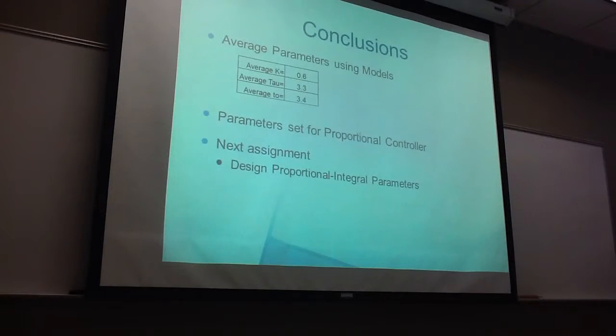And some conclusions. Our average parameters for the past few systems, we found an average gain to be about 0.6, an average time constant of about 3.3, and an average dead time of 3.4.